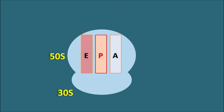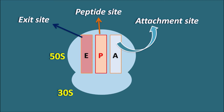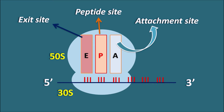The bacterial ribosome is made up of two subunits: the 50S subunit and the 30S subunit. The 50S subunit has three important sites — the A site, P site, and E site. The A site is the attachment site where tRNA is added; the P site is the peptide site where the peptide chain is elongated; and the E site is the exit site from where the vacant tRNA leaves the ribosome. Within the 30S subunit we can observe the mRNA, which has codons each specifying a particular amino acid.